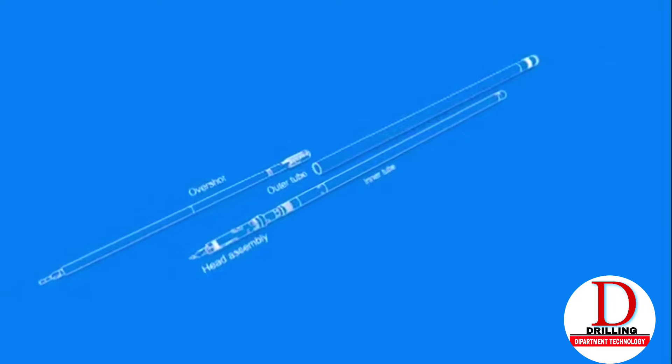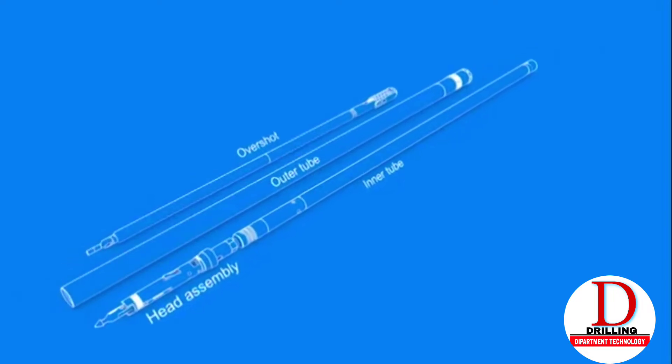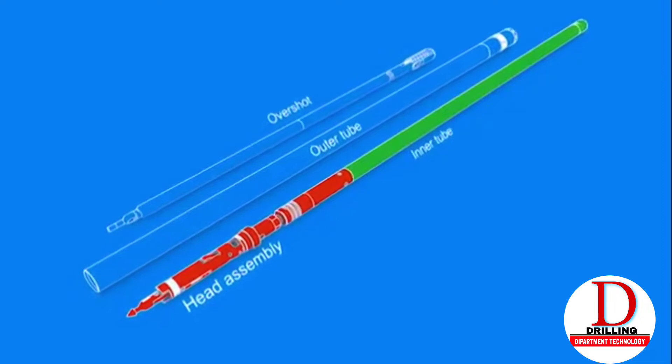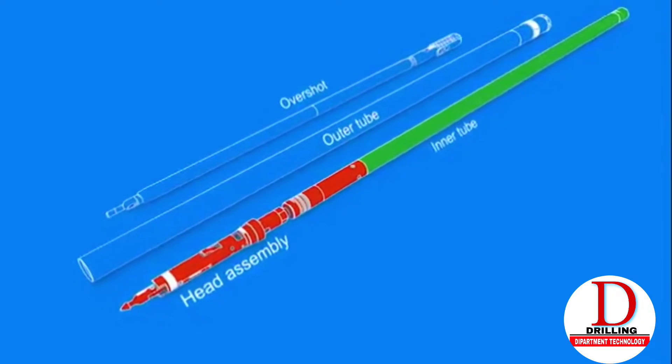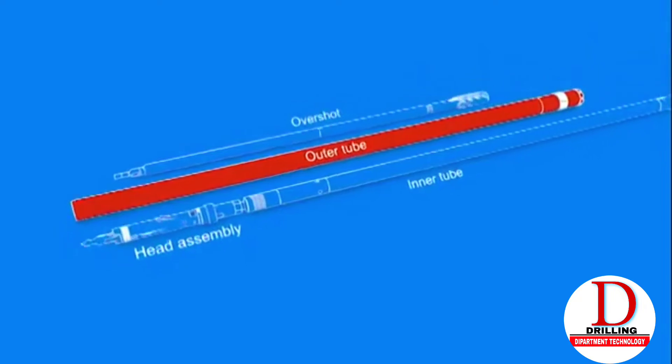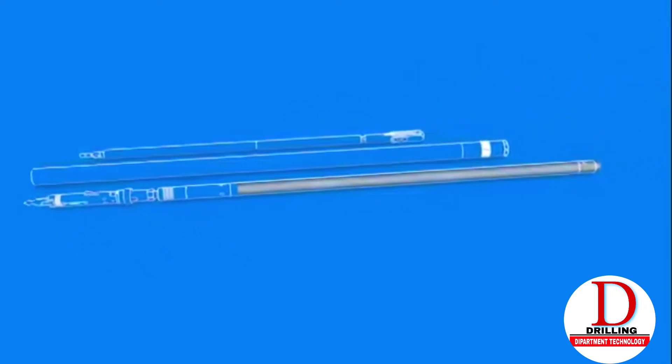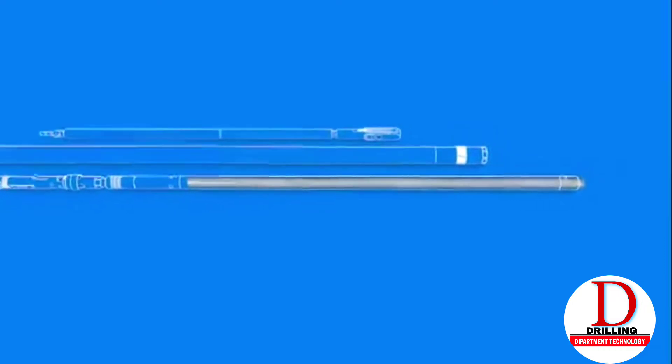The wireline core barrel consists of three basic components: the inner tube assembly, which consists of the inner tube and the head assembly, the outer tube assembly, and the overshot. The purpose of the inner tube is to store the core sample during drilling.